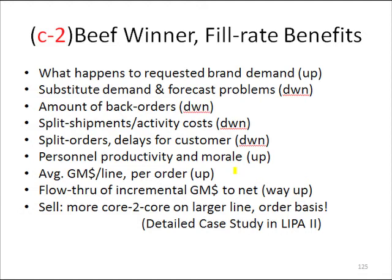Later on we'll actually see a case study where we have hard economic numbers on the delta PBIT that results from this. But for right now, I want you to think about if we had beefed up the number one item so that when people ask for it we have it — that demand then goes to that number one brand and doesn't get shared out to the other brand.